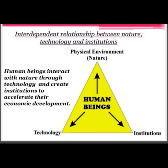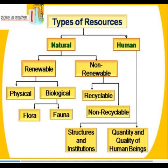Now how do we transform things in our environment to get a resource? There is an interdependent relationship between nature, technology, and institutions. Human beings interact with the physical environment and find out things which can be used by us. For example, we explore forests and use wood; we take out minerals from deep inside the earth. We do this by using various technologies and ultimately create institutions — for example, a mining industry for minerals, or a fuel wood industry for forest products. All this together creates a resource.